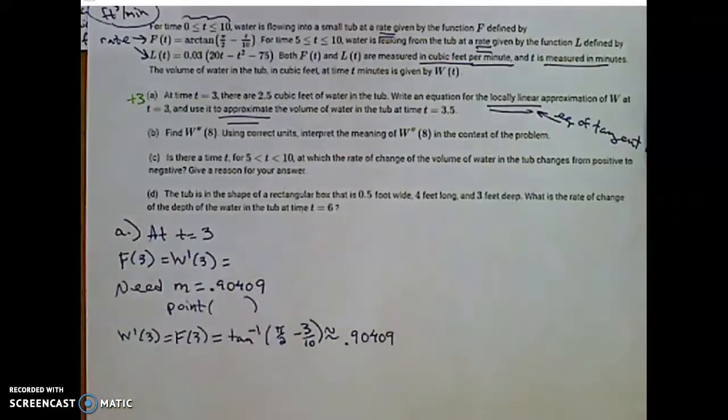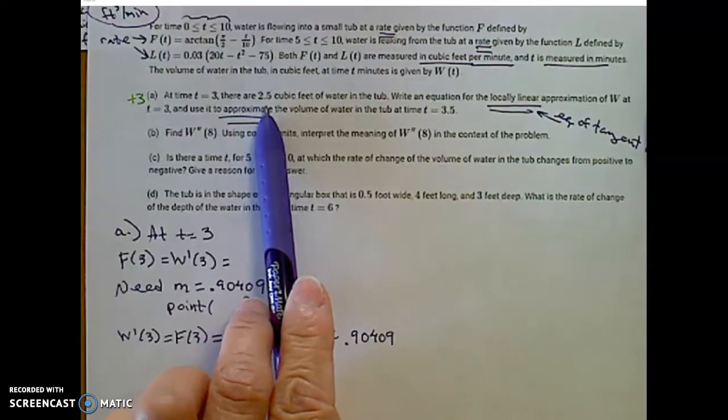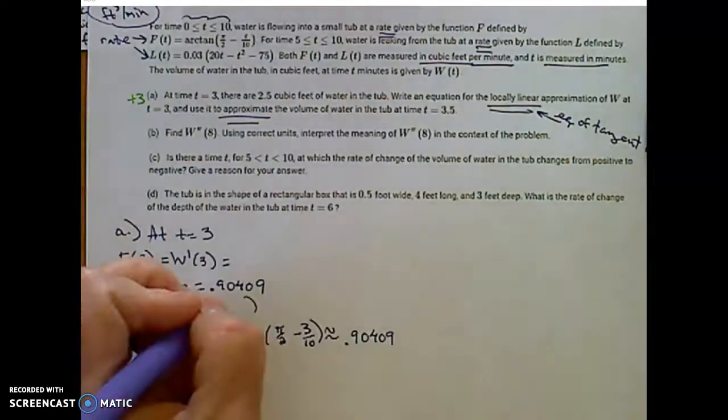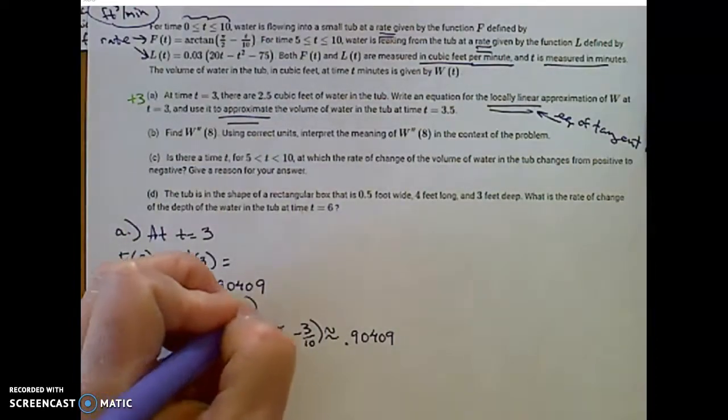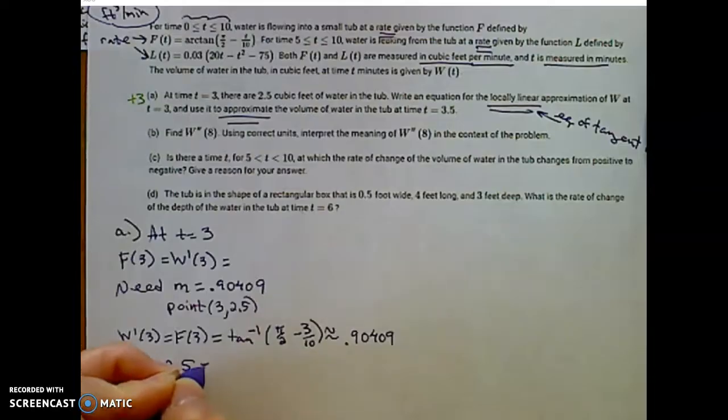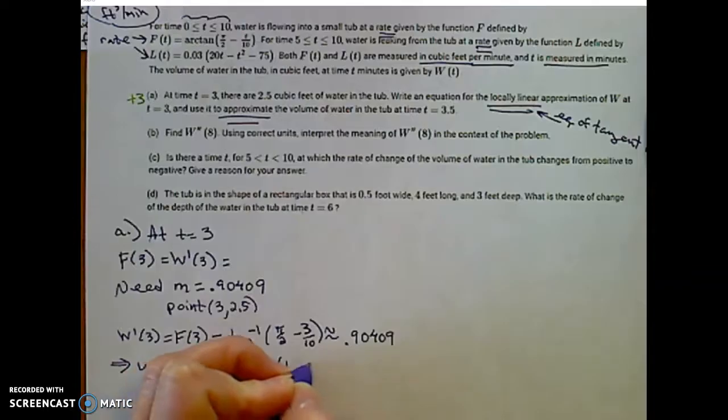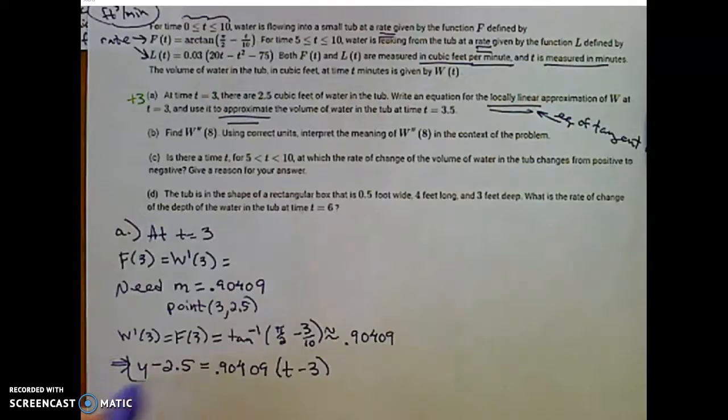So the slope is 0.90409. But we're given that at time equals 3, there's actually 2.5 cubic feet of water in the tub. So for an input of 3, my output is 2.5. That implies my equation for local linearity. I'm going to use point-slope form: y minus 2.5 is equal to my slope, 0.90409 times t minus 3.